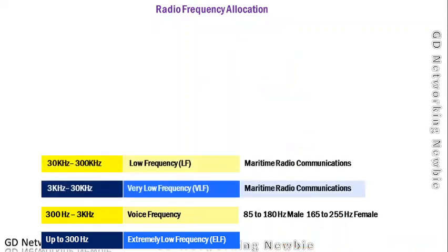Next we have the range from 3 kilohertz to 30 kilohertz. Remember, kilo means three zeros, so 3 kilohertz means 3000 hertz. This range is known as Very Low Frequency (VLF). From 30 kilohertz to 300 kilohertz is known as Low Frequency (LF).